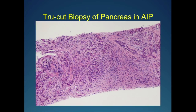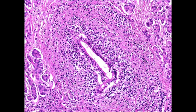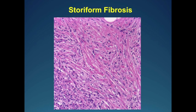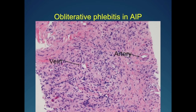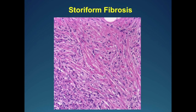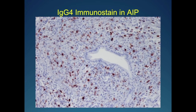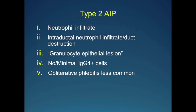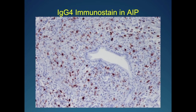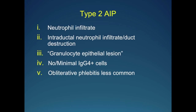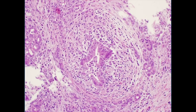This is another view of the diffuse lymphoplasmacytic infiltrate — the duct is still intact. And this is the storiform whorly fibrosis; in a blinded study, this was enough to make a call of AIP in patients who had chronic pancreatitis. And then there is this obliterative phlebitis — the vein may still be open, but when inflammation gets more advanced, the artery is completely spared, and it's unclear why. Type 2, on the other hand, has a neutrophilic infiltrate with intraductal infiltration of the duct lining — the granulocyte epithelial lesion — which often destroys the lining and causes obliteration of the duct. There is minimal to no IgG4-positive cells, and obliterative phlebitis is far less common.